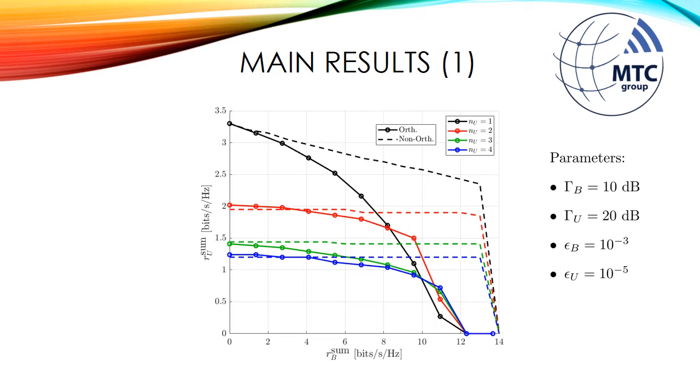In this figure, we have on the x-axis the EMBB sum rates, on the y-axis the URLLC sum rates, the dashed curves corresponding to the non-orthogonal slicing, the continuous curves for the orthogonal slicing, and then we plot the pairs of maximum achievable sum rates for different numbers of URLLC users performing NOMA. And in this case here, we observe that non-orthogonal slicing is always better than orthogonal slicing in this range of EMBB sum rates, but as we increase the number of URLLC users, we decrease the sum rates, which means that we have a trade-off between sum rates and number of connected devices.